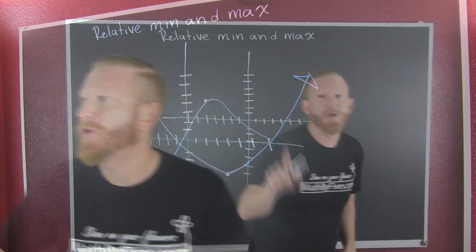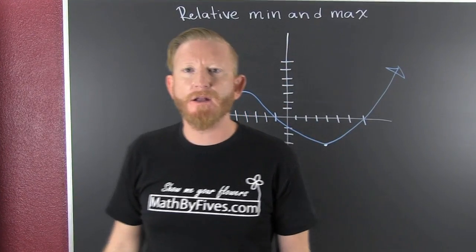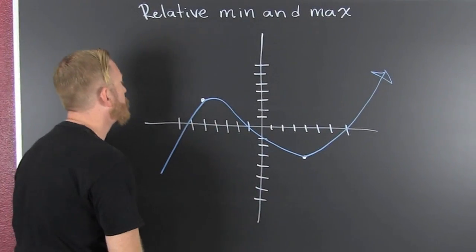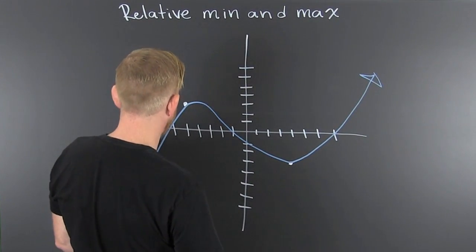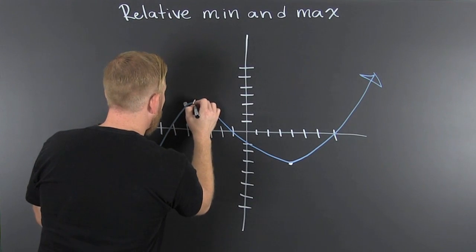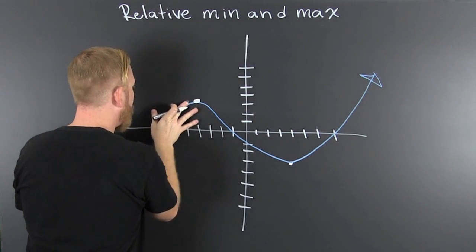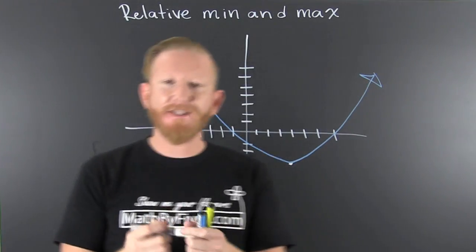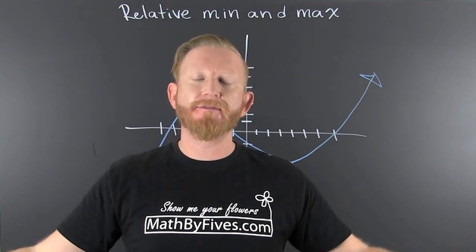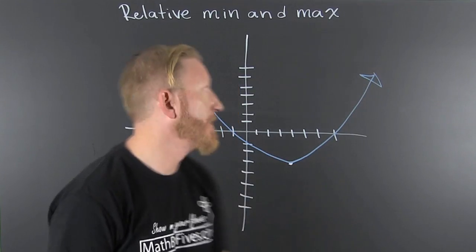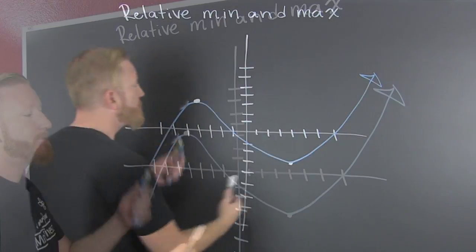Relative minimums and relative maximums - what am I talking about? I'm talking about the high and low points relative to the points around them. We're talking about the relative min and the relative max. This has both the relative min and a relative max.